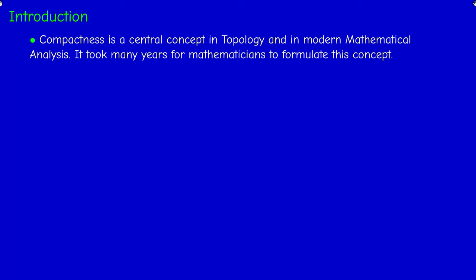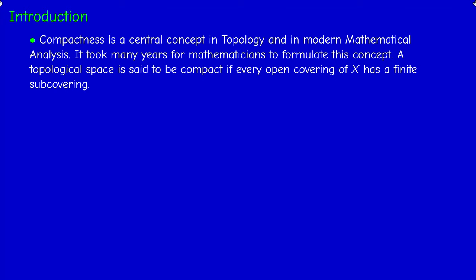Here is the definition: a topological space is said to be compact if every open covering of X has a finite sub-covering. I will explain that in detail. The definition deals with open coverings. It was discovered by Borel and Lebesgue that any closed interval [a,b] has this property — and this is not trivial.